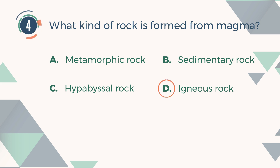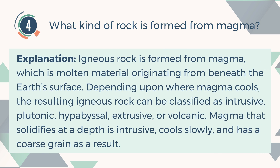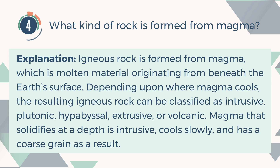The correct answer is D. Igneous rock. Explanation: Igneous rock is formed from magma, which is molten material originating from beneath the earth's surface. Depending upon where magma cools, the resulting igneous rock can be classified as intrusive, plutonic, hypabyssal, extrusive, or volcanic. Magma that solidifies at depth is intrusive, cools slowly, and has a coarse grain as a result.